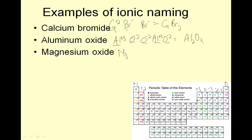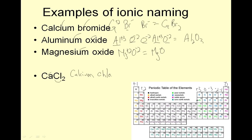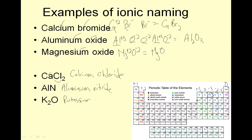CaCl2: Ca is calcium. Cl is a negative ion, so it's chloride — not chlorine, chloride. AlN: Al is aluminum, and N — make it sound evil — nitride. K2O: potassium oxide. So it starts with a metal. You don't need prefixes for ionic compounds.